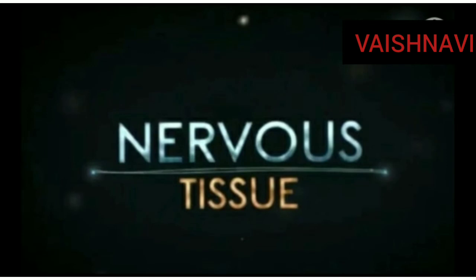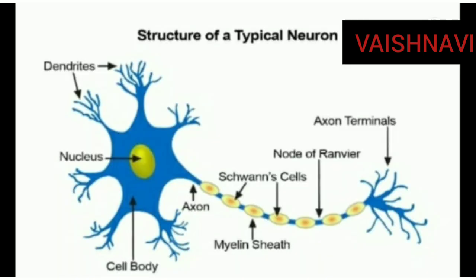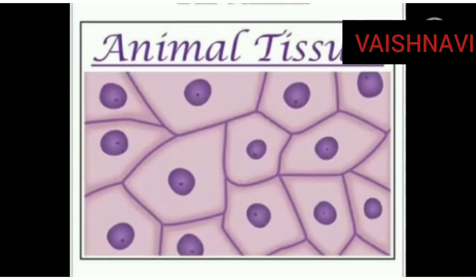Now let us know about nervous tissue. Nervous tissue is a specialized tissue that responds to internal and external stimuli. Nervous tissue is made up of neurons. A neuron is made up of a cyton, dendrites, and axon. The cyton has a nucleus and cytoplasm. Dendrites are hair-like projections from the cyton. The axon is the elongated portion of the neuron. The myelin sheath insulates and protects the axon. This is the information about nervous tissue.